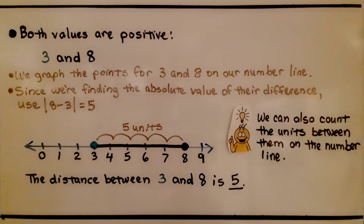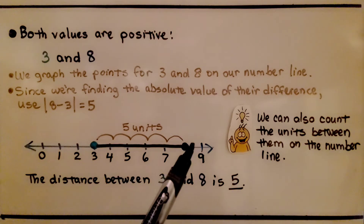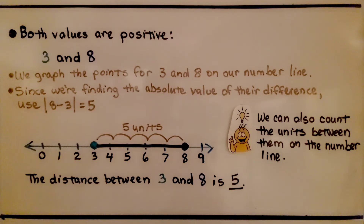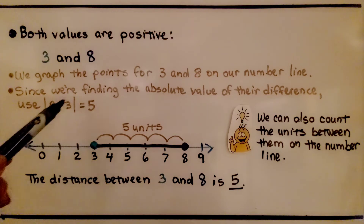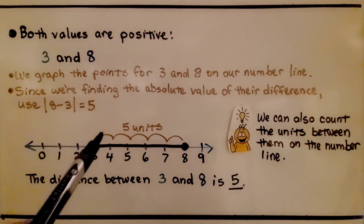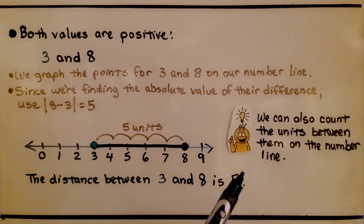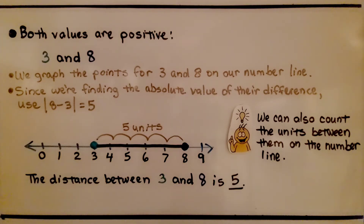Here's another example with both values positive. We have positive three and positive eight. We graph the points three and eight on our number line, and since we're finding the absolute value of their difference, we can use the absolute value of eight minus three, which is five. Between three and eight, we have five units. We can also count the units between them on the number line.